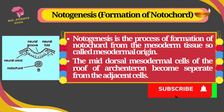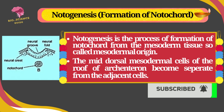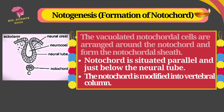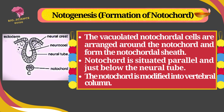Notogenesis is the process of formation of notochord from the mesodermal tissue, so called mesodermal origin. The mid-dorsal mesodermal shell of the roof of the archenteron becomes separate from the adjacent cells. The vacuolated notochord cells are arranged around the notochord and form the notochord sheath. The notochord is situated parallel and just below the neural tube.